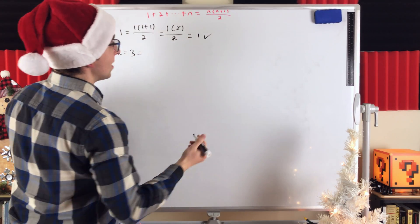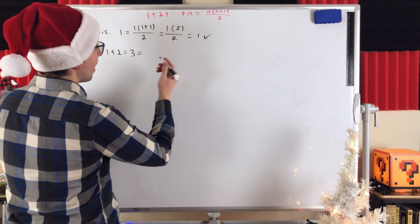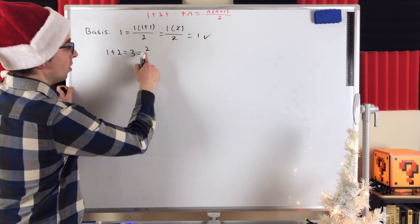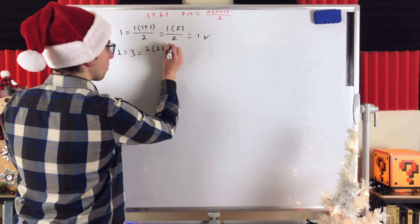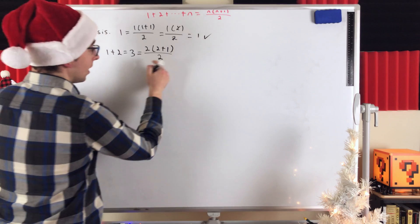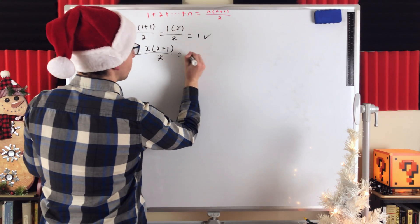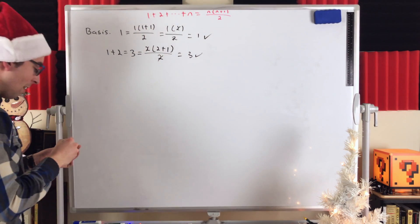Now, will our equation give that same result? Let's see. n equals 2. So that will be 2 times 2 plus 1 all over 2. 2's cancel out. We're left with 2 plus 1, which is equal to 3. Hey, look, it works. Beautiful. All right. On to the induction step.